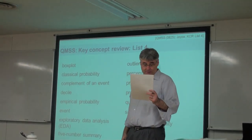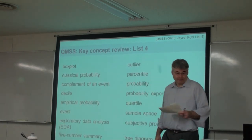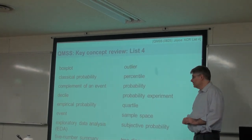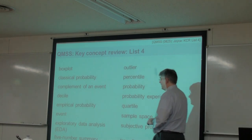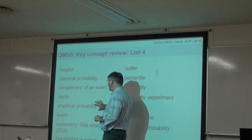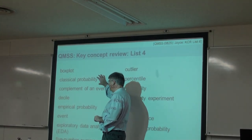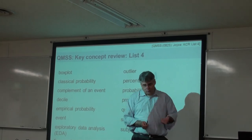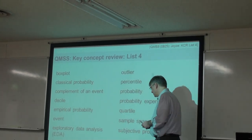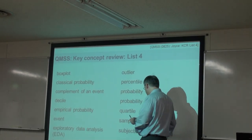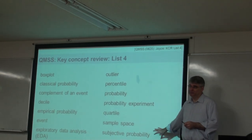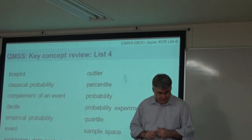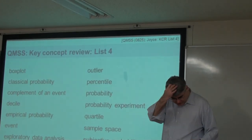Subjective probability is where we probably have not collected empirical data so far and there are many factors that could be influencing. It's not just a simple one-or-the-other coin toss situation — it's much more complicated. We don't know, so we're going to have to make our best ballpark figure and hope that we're close to it, perhaps from existing data.